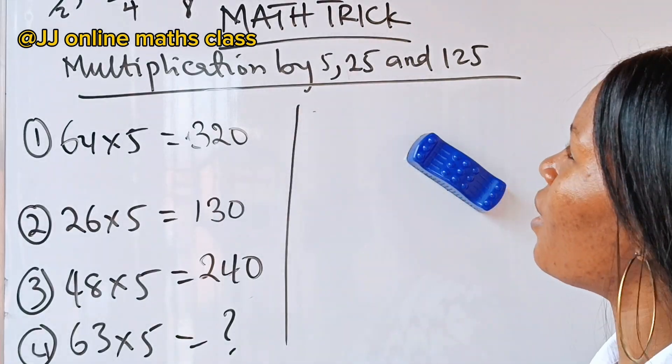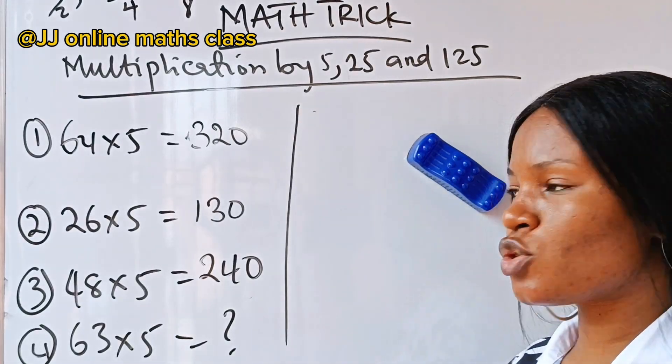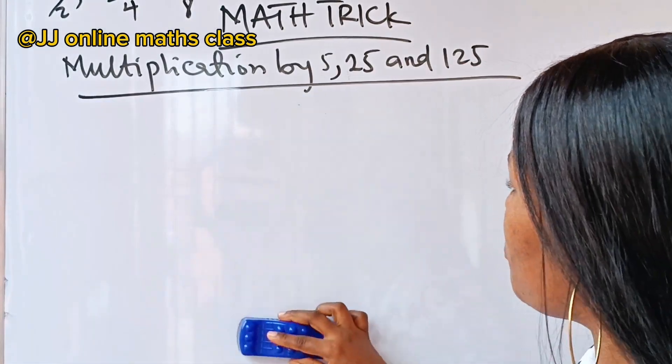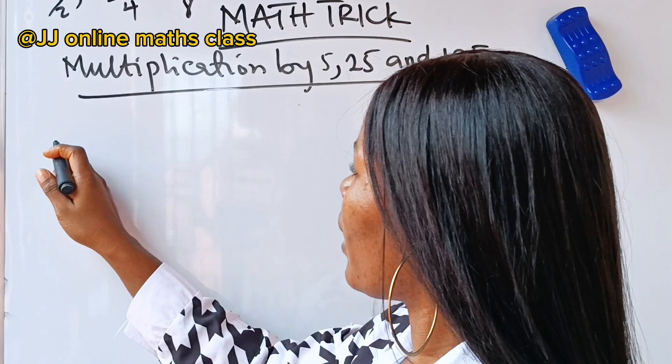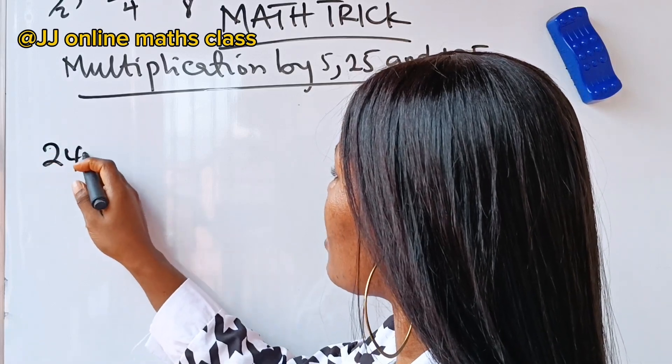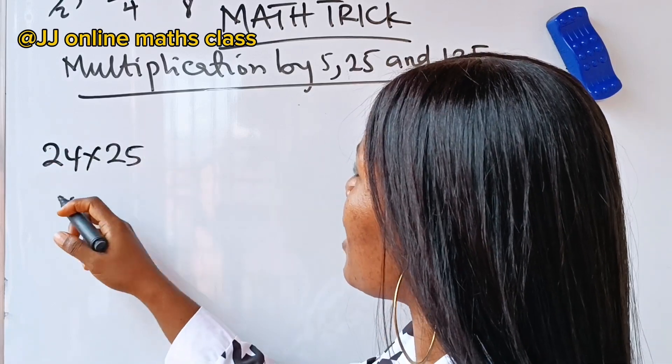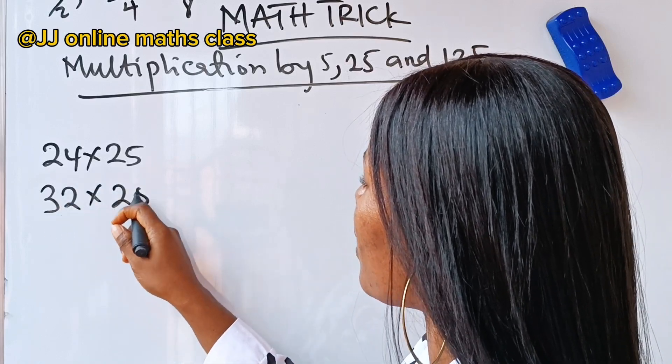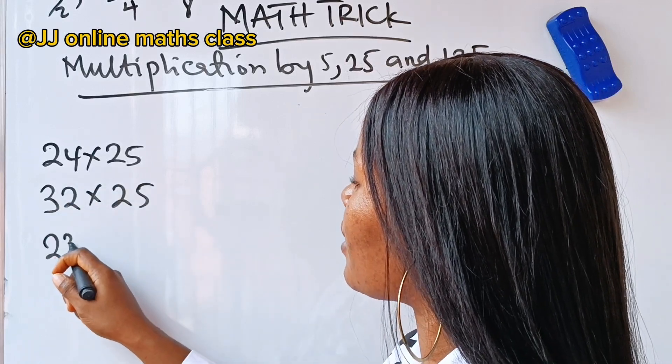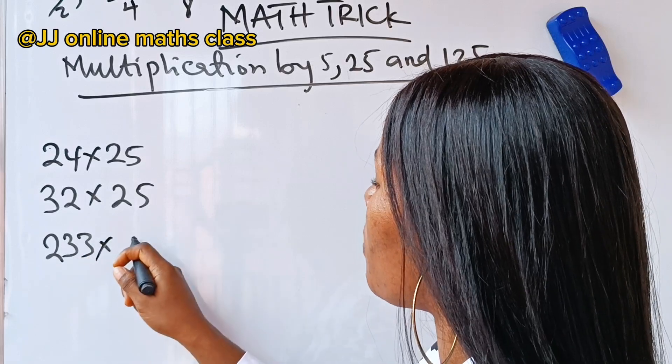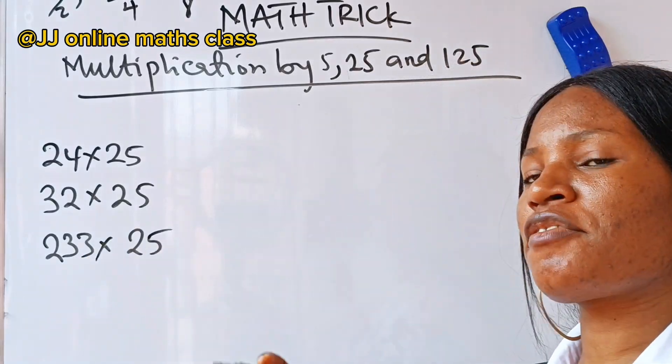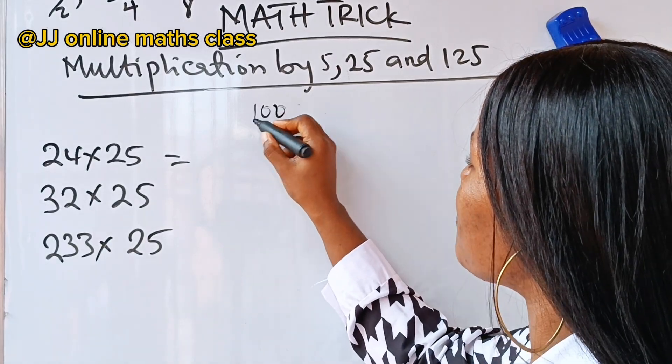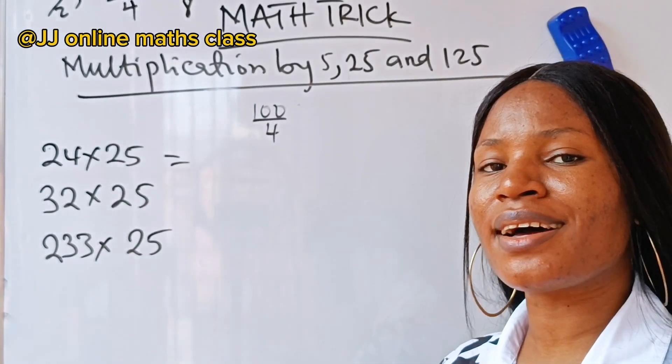Now, let's go ahead and do a multiplication by 25. We have 24 times 25. Like I said, you can use any number of digits you want. 32 times 25, 233, let me bring in three-digit numbers, times 25. For 25, 25 is the same thing as 100 divided by 4.